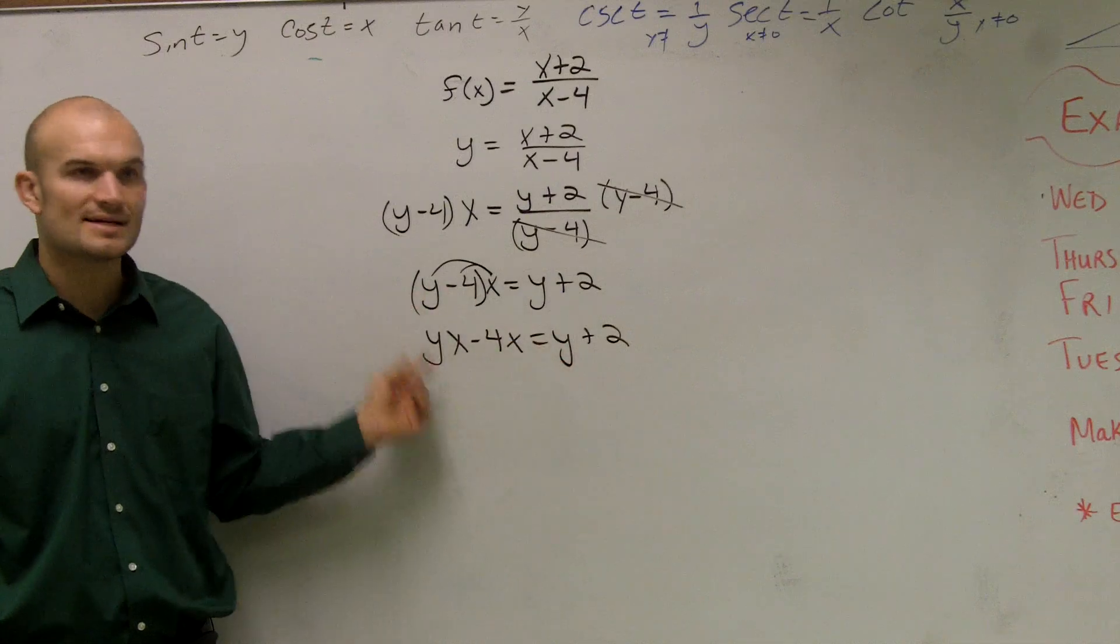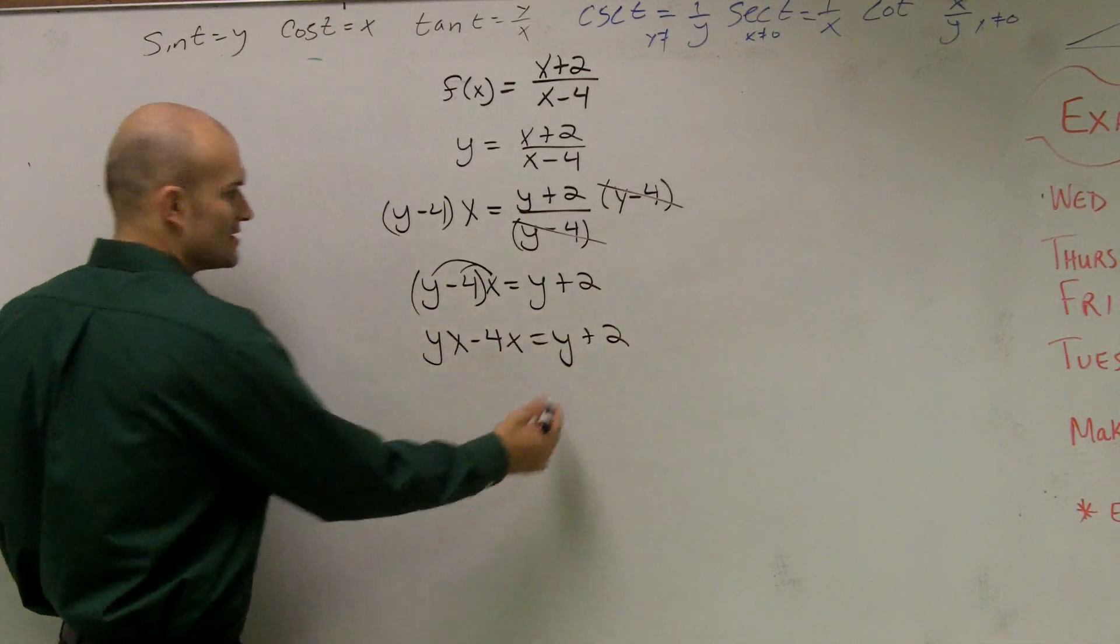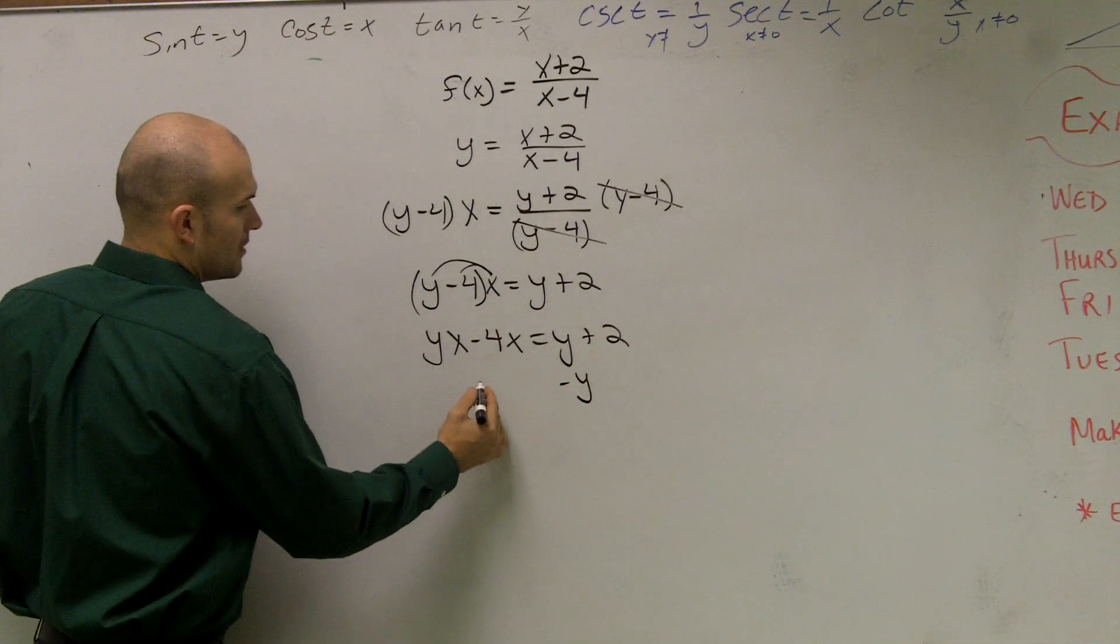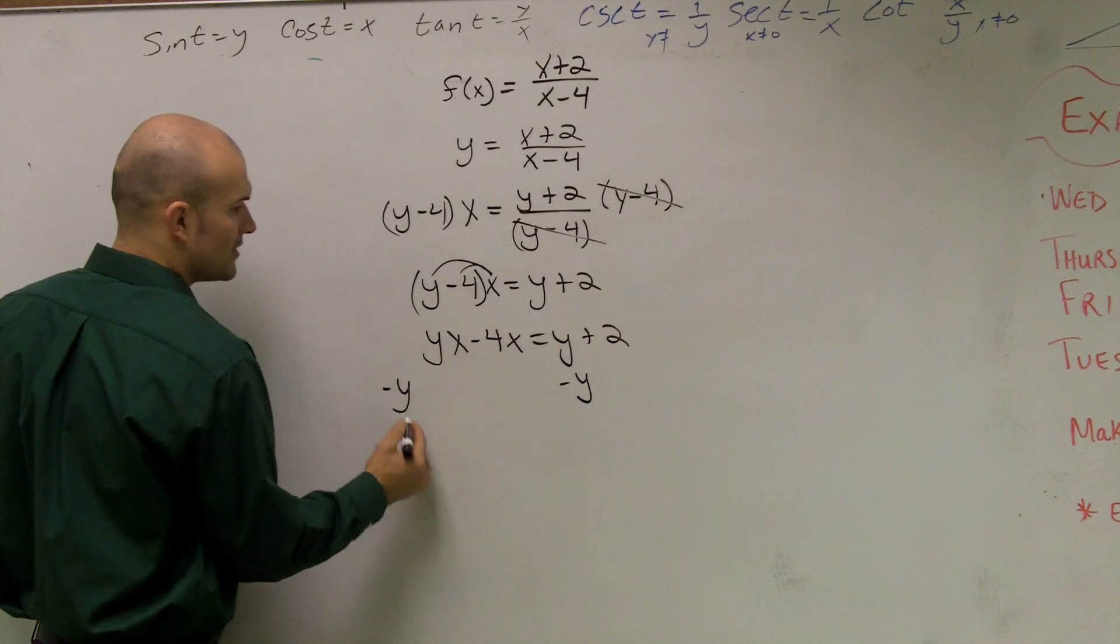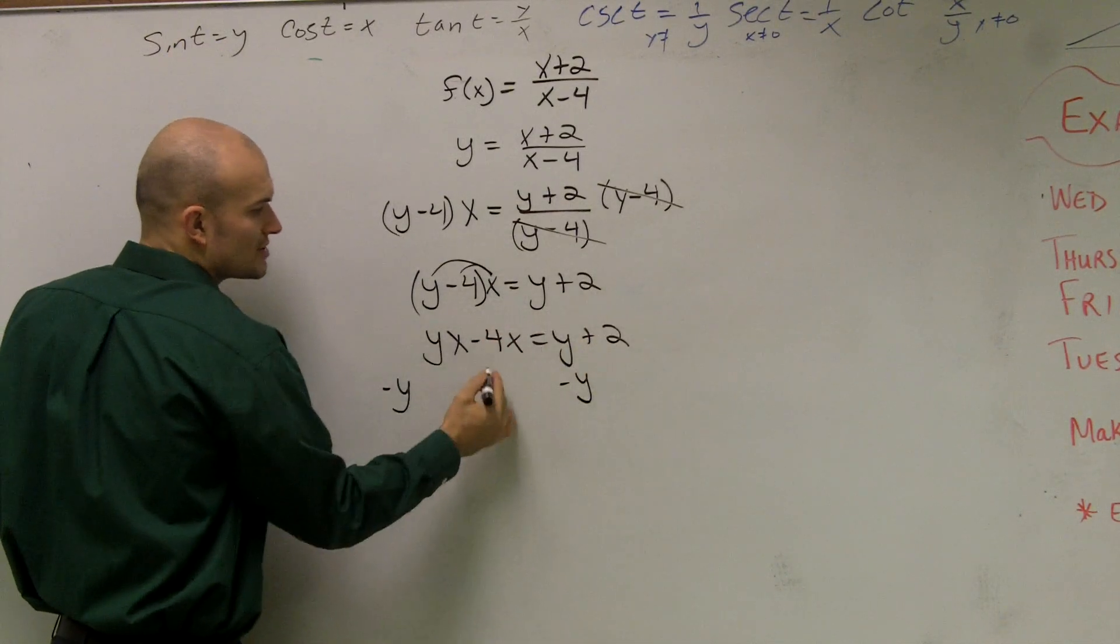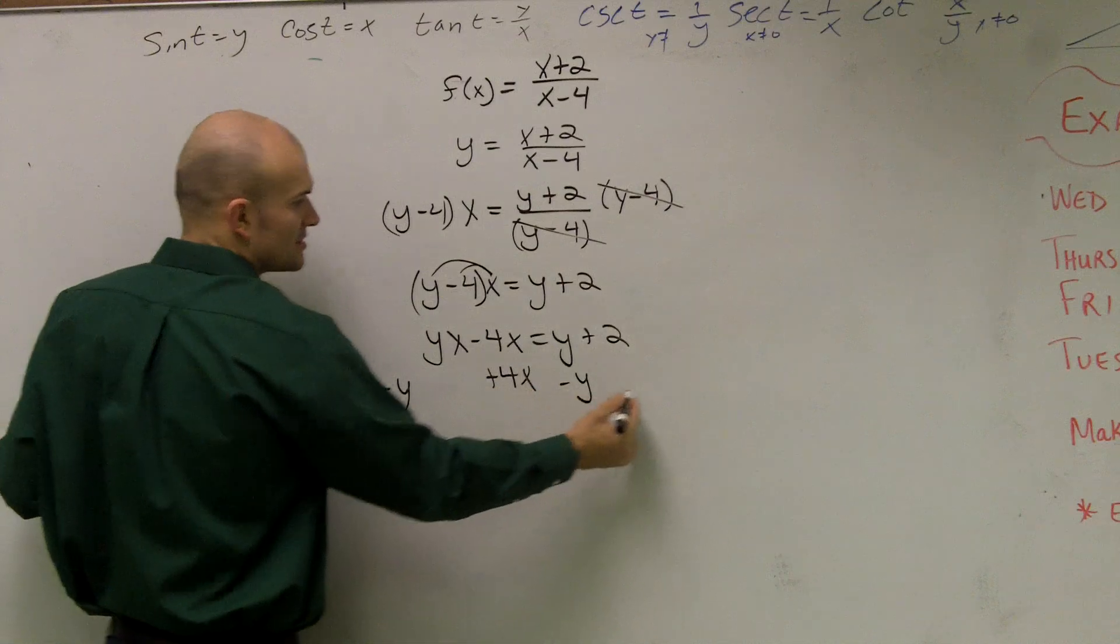And now I want to get the y's on the same side. I will choose to get the y's on the left side. So I'm going to get rid of this y on the right side by subtracting it. And let's see, I'll subtract the y over here. Then I'm actually going to put the 4x on the other side. So I'm going to do two different steps together.